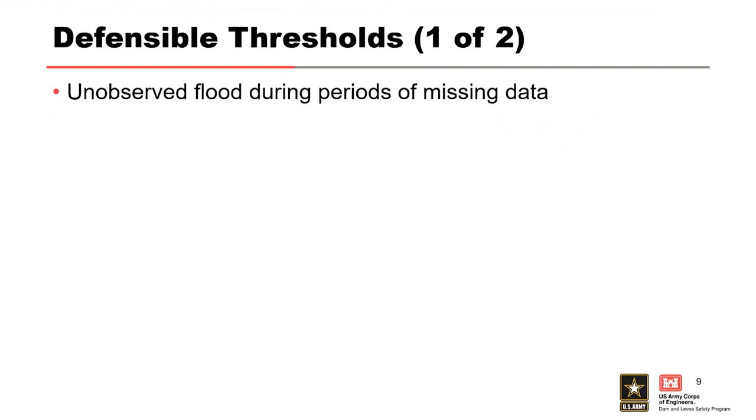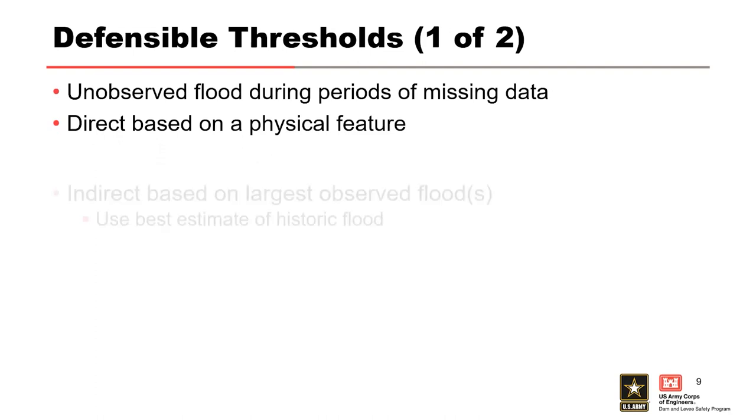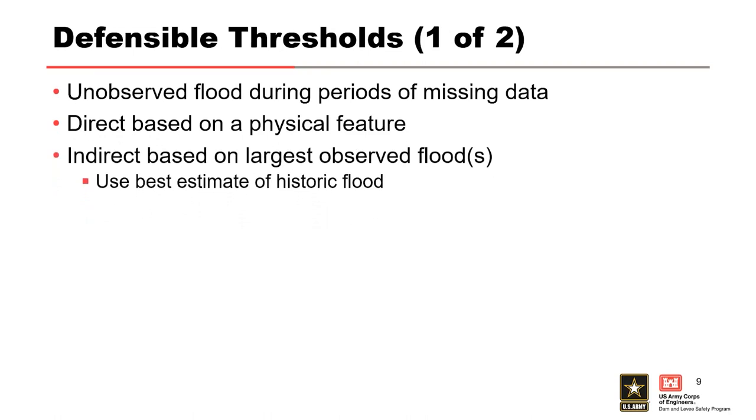The last topic I'll cover are a few strategies for developing defensible perception thresholds. Remember that thresholds are used to represent floods that have not been directly observed, but whose magnitude can be judged to be less than some value based on other evidence. This evidence can come directly from physical features, for example, flows below the gauge base of a crest stage gauge are not recorded. Thresholds can also be based on indirect evidence, such as knowing that a particular flood during a given time period is the largest observed flood. Therefore, all the unobserved floods during that same time period should have been less than that largest flood.